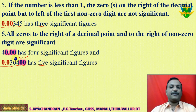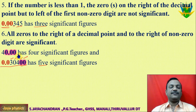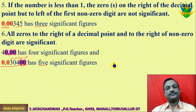To recap with an example: if the number is greater than one with a decimal point and trailing zeros — like 40.00 — those zeros after the decimal are significant. This is significant figure 4.